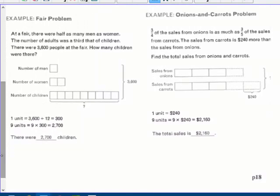First example here. At a fair, there were half as many men as women. So men is one bar, women is two. The number of adults, men and women, was a third of that of children. So children are three times the total of the adults, which is one, two, three bars. You can see there. So one, two, three, one, two, three. So three times the men plus the two for women, men plus two for women, men plus two for women.